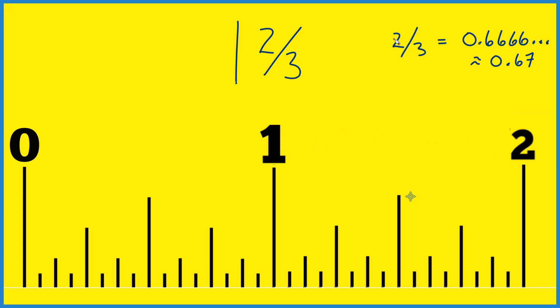If you divide two by three, you'll get 0.6666 — it just keeps going. So we're going to call it 0.67. That's the decimal for two thirds.